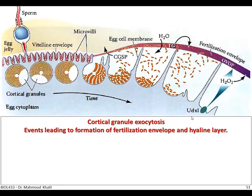Here is another figure illustrating this process and the molecules involved. The sperm starts to bind via its acrosomal process, having already passed through the jelly coat. Once in contact, the cortical granules inside the egg cytoplasm near the cortical region start to approach the cell membrane and release their contents. You can see the vitelline envelope, which already has microvilli-like structures.